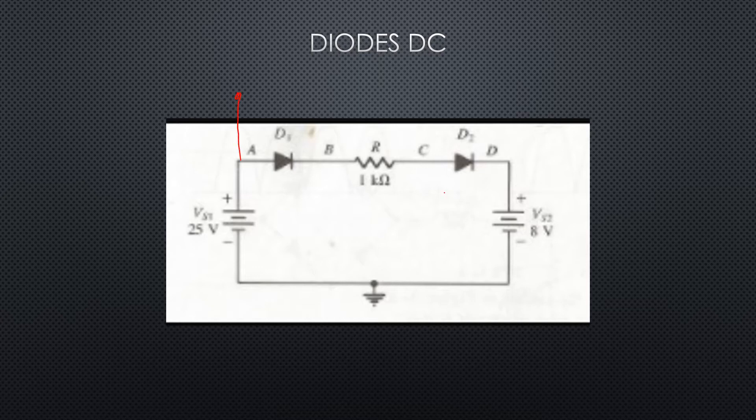In order to do that, we're going to do a Kirchhoff's loop from point A all the way to point D. We know that we want to have our plus potential at point A in order to have those diodes forward biased. So if we go from point A, we've got plus 25 minus 8, so the potential from point A to point D is 17 volts — from here to here we've got 17 volts.